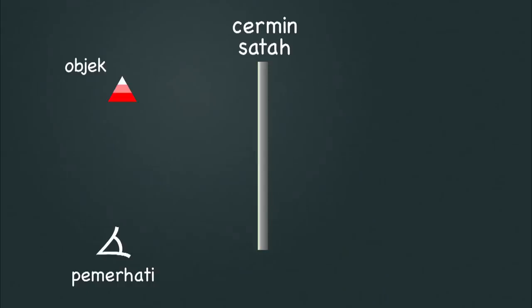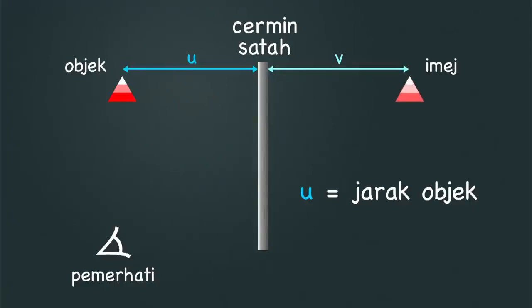Sekarang, mari kita belajar teknik melukis imej yang terbentuk oleh cermin satah. Anda perlu ikut langkah-langkah berikut. Langkah satu: Ambil pembaris dan ukur jarak antara objek dan cermin. Langkah dua: Dengan menggunakan jarak yang sama tadi, kita lukis imej selari dengan objek di dalam cermin. Pastikan saiznya sama.